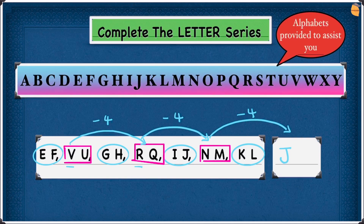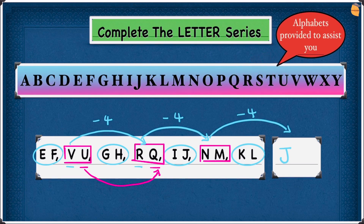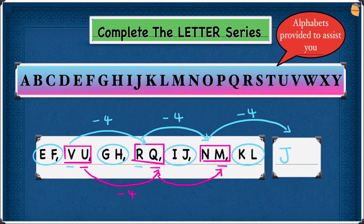Now we're going to look at the second part: U to Q. What do we have to do to U to give us Q? Looking at the alphabet, U is here — 1, 2, 3, 4 — minus four steps backwards gives us Q. So minus 4. Now from Q to M: Q is here and M is here — 1, 2, 3, 4 — so minus 4. Write minus 4.